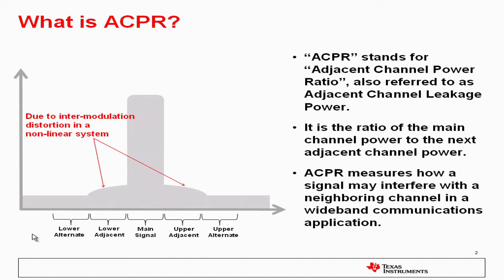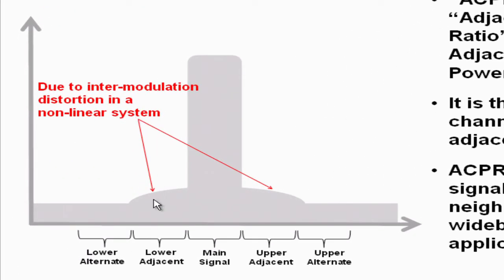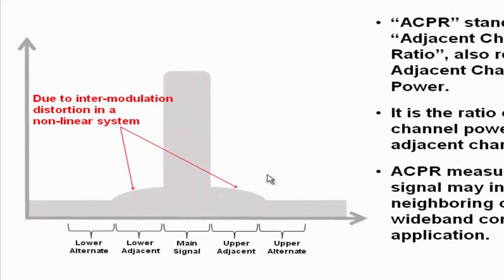Due to nonlinearities in the system, intermodulation from a wideband or modulated signal tends to leak into adjacent sidebands. So the ACPR is actually the ratio of the power in the main channel to the power in an equal bandwidth of an adjacent channel.